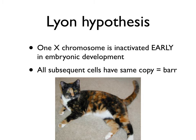An interesting consequence of X inactivation is the chimeric nature of female bodies, encapsulated by the Lyon hypothesis. One X chromosome is inactivated early in embryonic development — not at the one-cell stage, but perhaps when there are about 100 cells. Every cell then randomly turns off one of its X chromosomes, and that inactivated chromosome becomes a Barr body for that cell and all of its descendants.